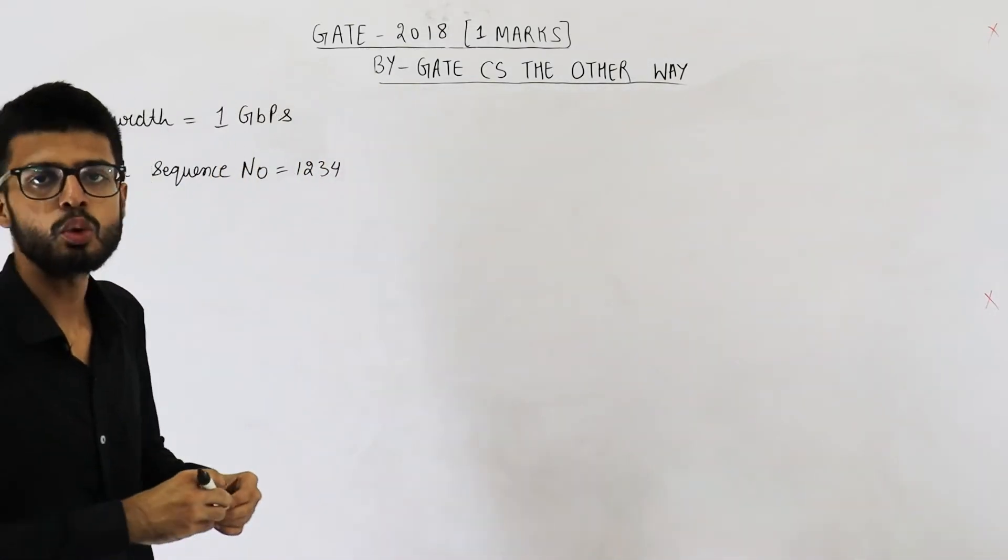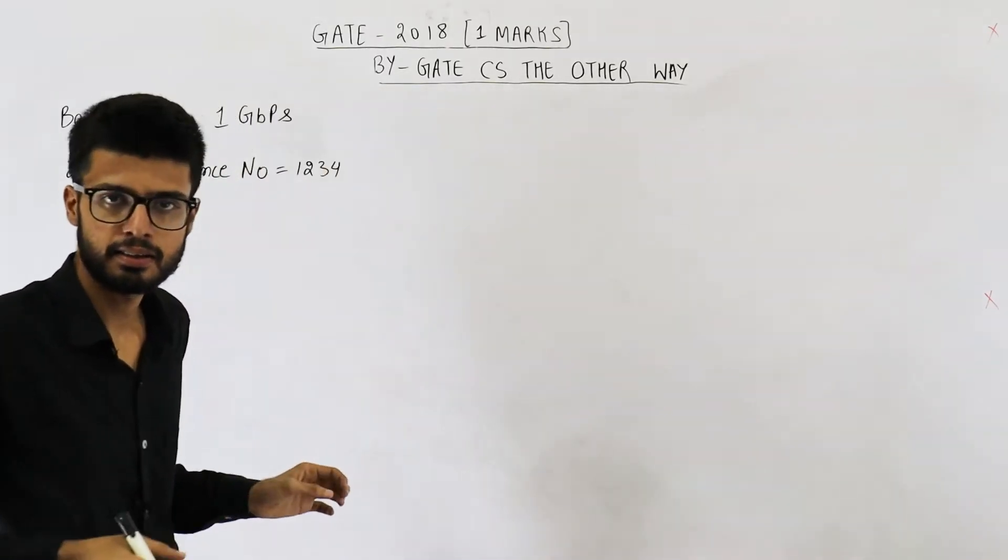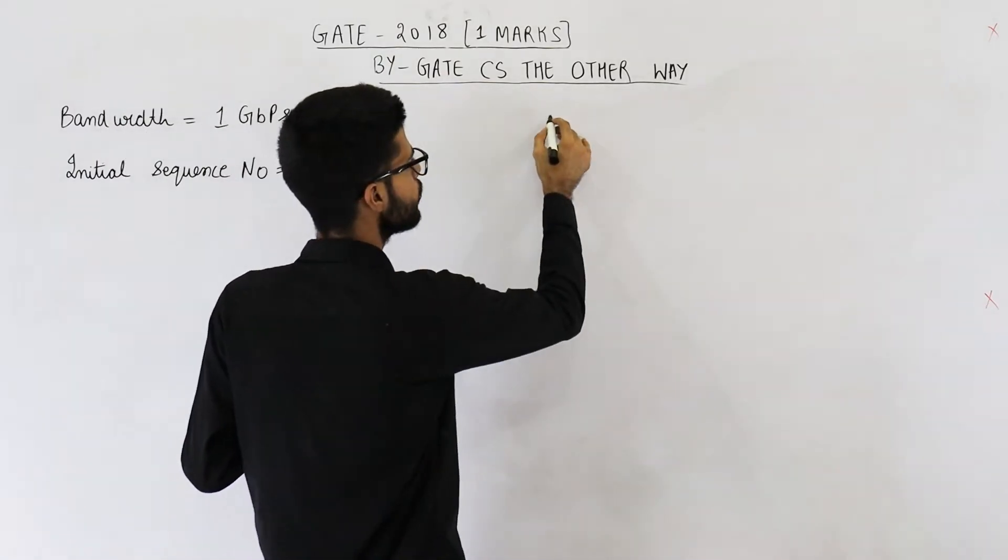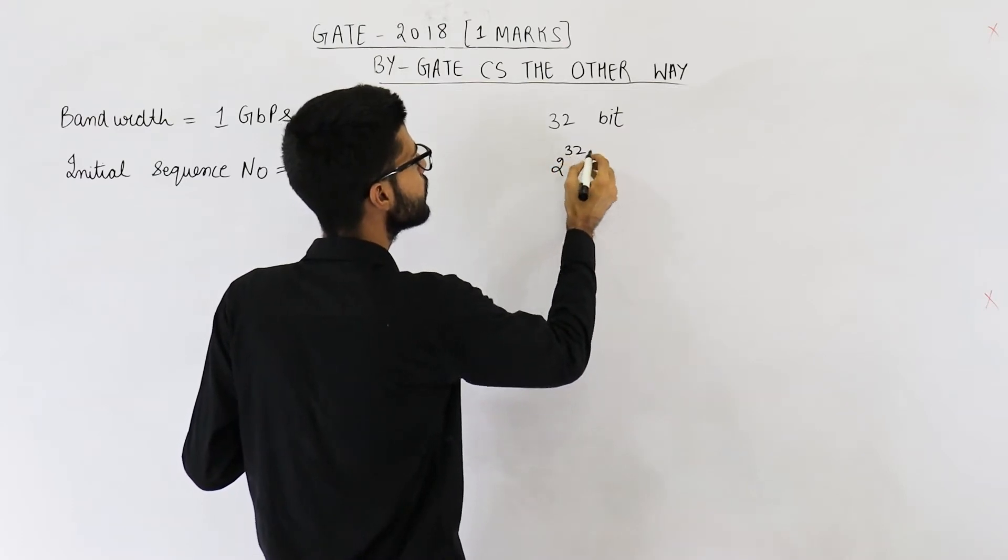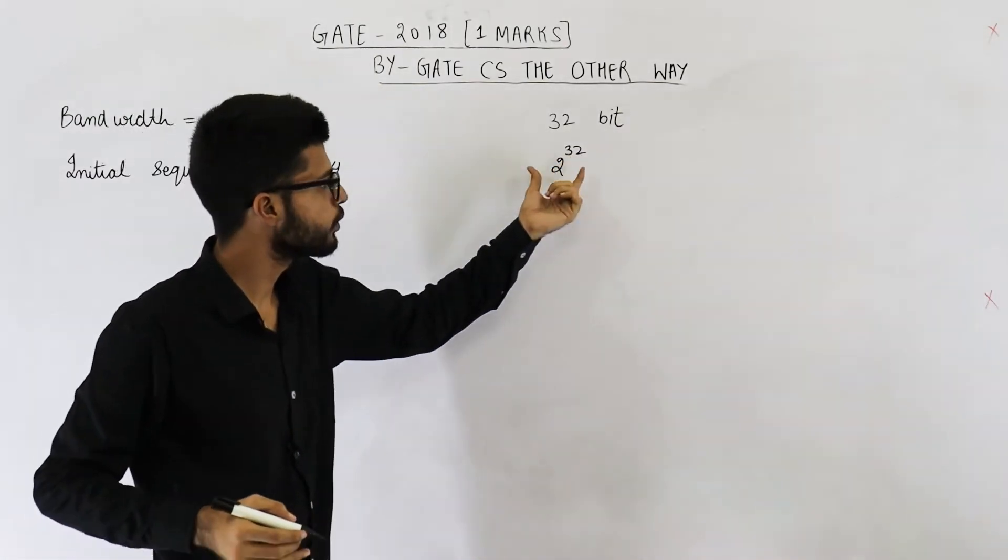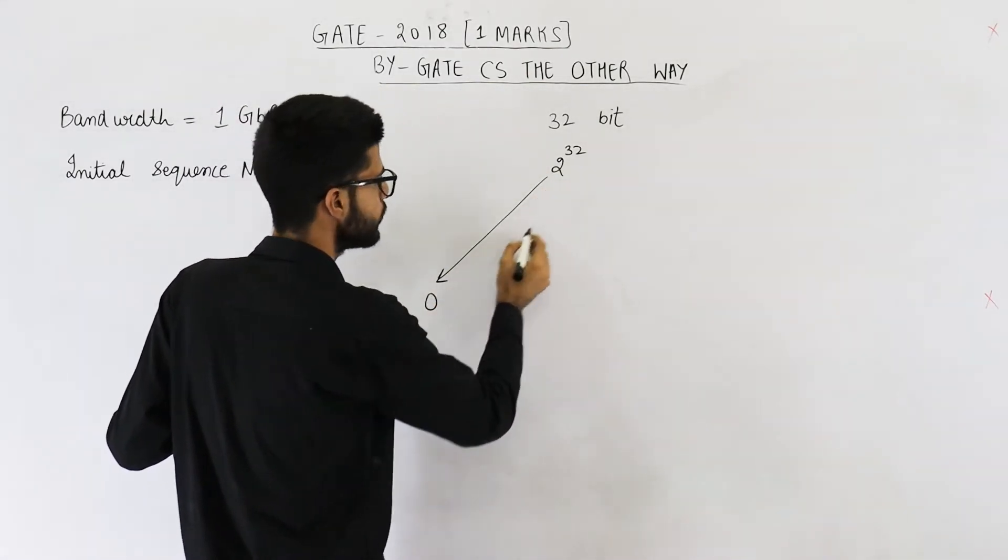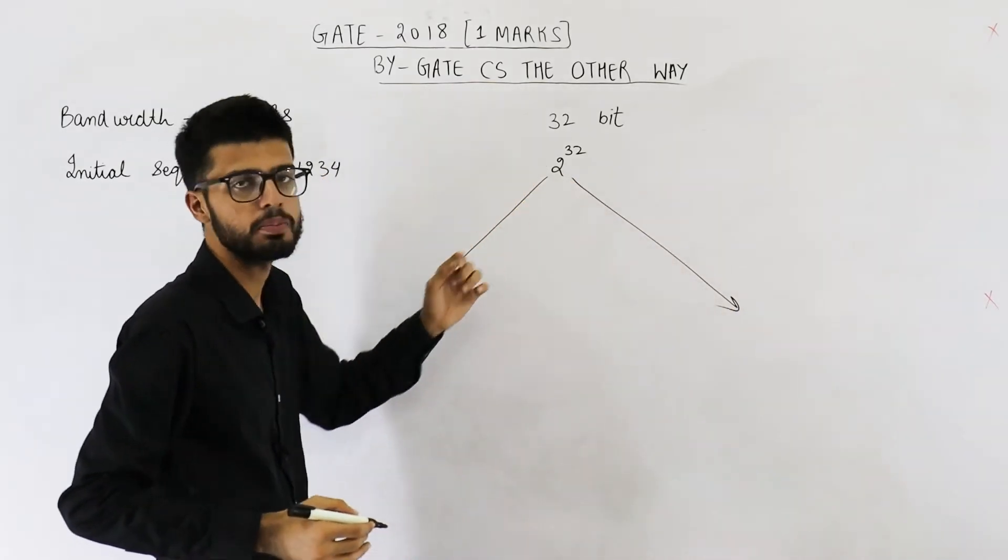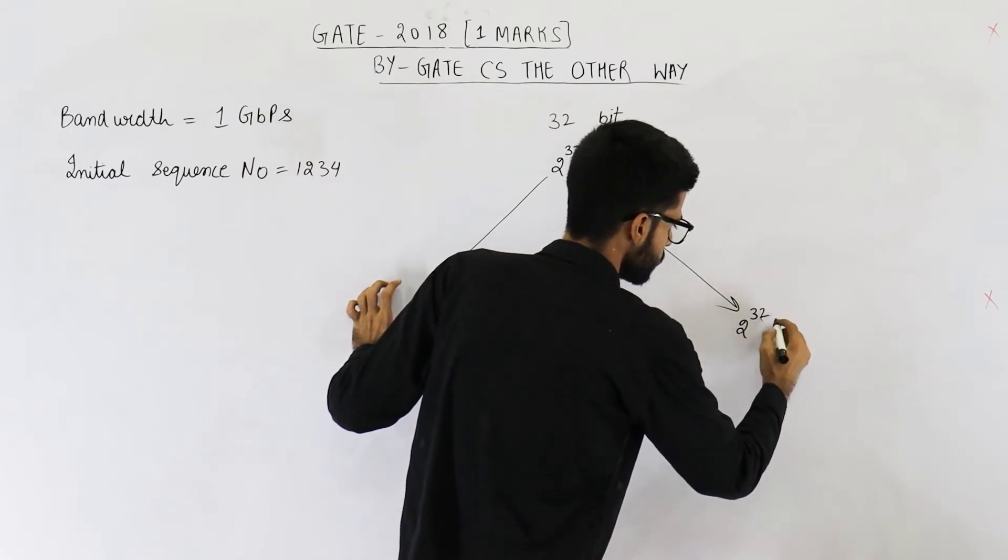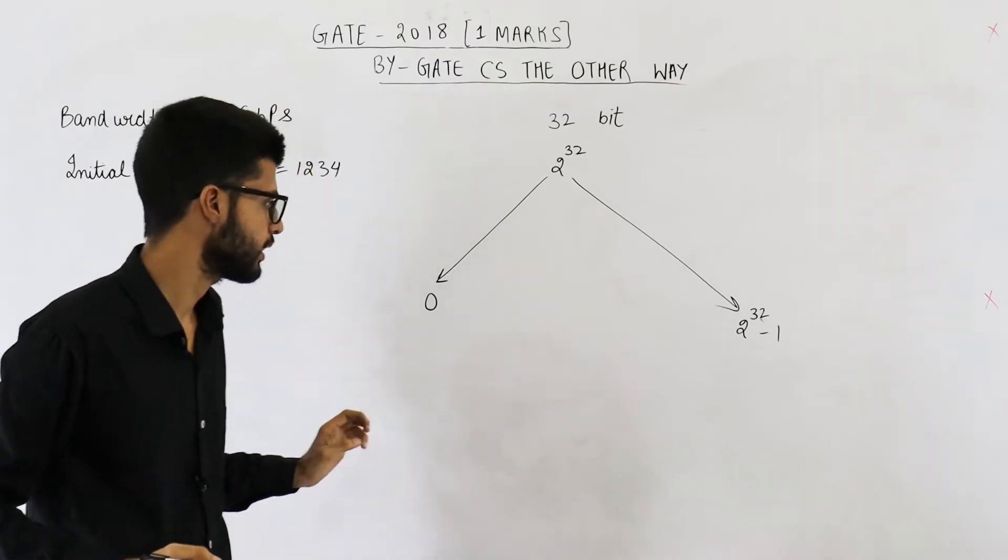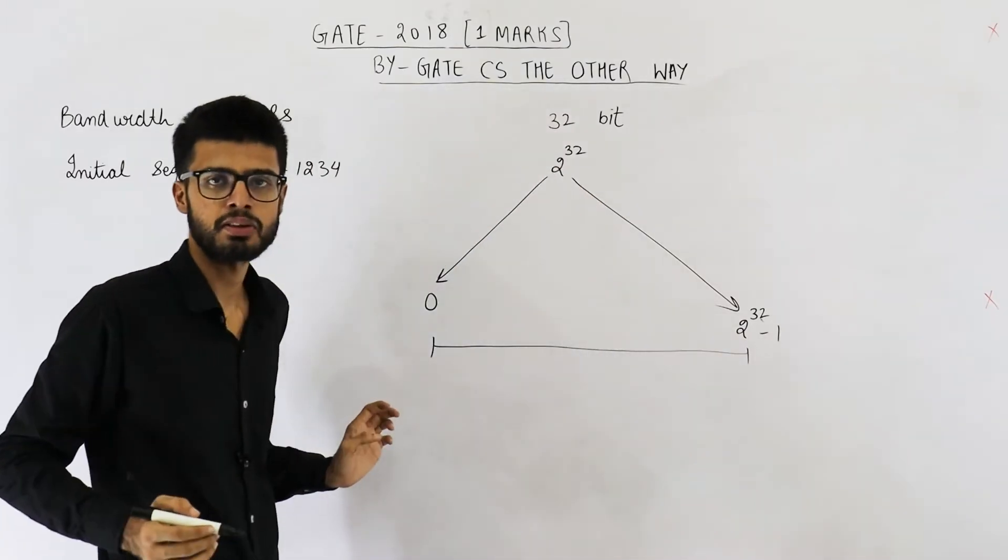Now let us see how many total sequence numbers are available. That depends upon how many bits are there to save the sequence number. That is 32 bits. So with 32 bits, you can generate 2 raised to the power 32 combinations. So total sequence numbers are these many. They will start from sequence number 0 and they will go to sequence number 2 raised to the power 32 minus 1. So this is the range of sequence numbers that TCP uses.